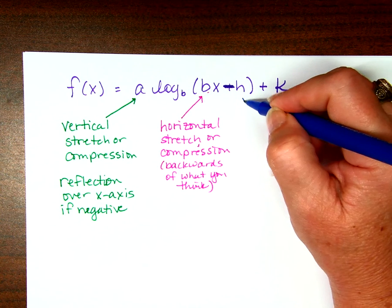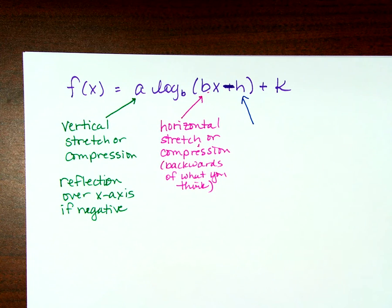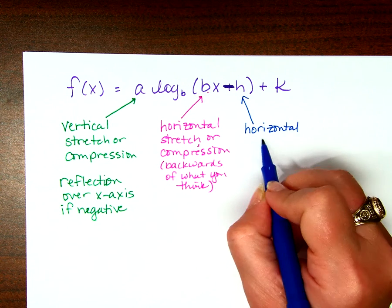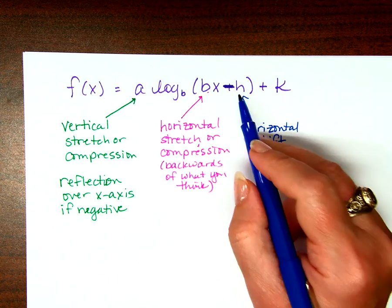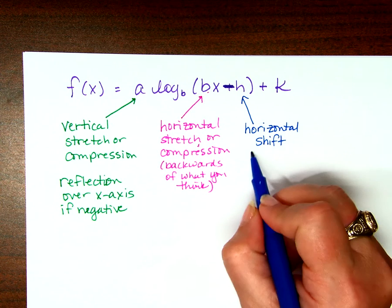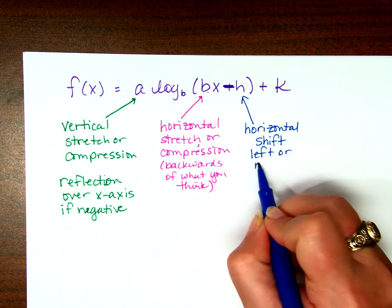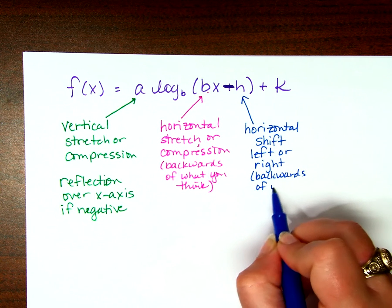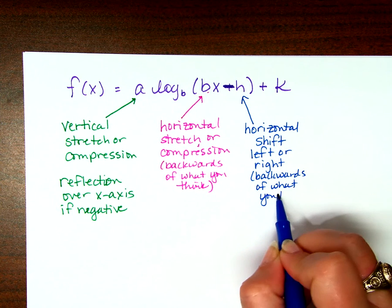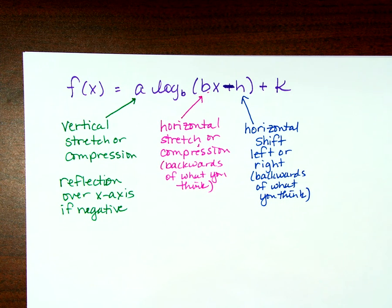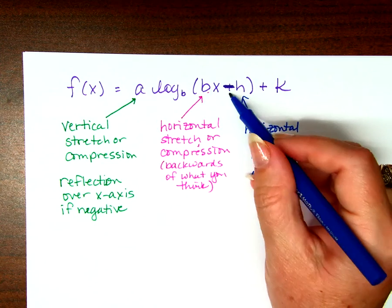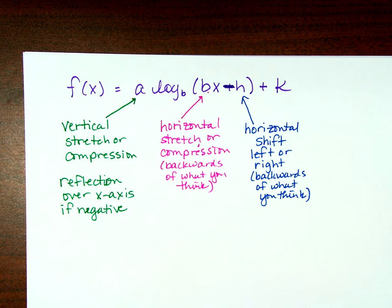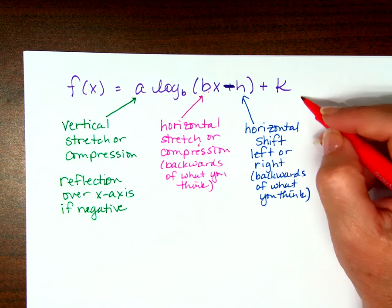Next we have this h. That's inside the function, so that's causing a horizontal change. But it's a horizontal shift, because it's being added or subtracted. And horizontal is going to be left or right. But again, it's backwards of what you think. If this is x plus 4, it's going to move left 4. If it's x minus 5, we're going to move right 5.